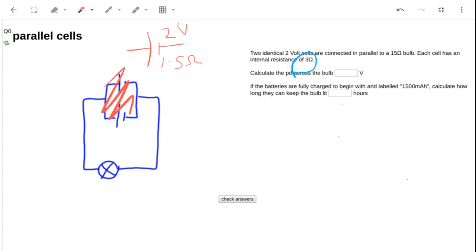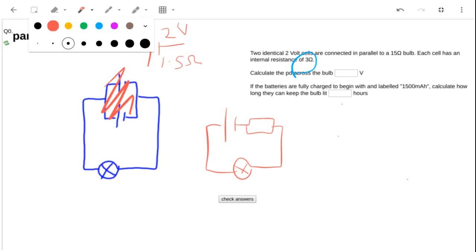So I've got something like battery, resistor, bulb, and it's always good to draw these circuits out and label what you can. So I've got two volts there, 1.5 ohms there, it's a 15 ohm bulb. Now hopefully we can see what's going on. Calculate the PD across the bulb, well we could use different ways to do this.